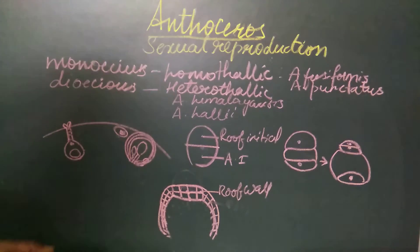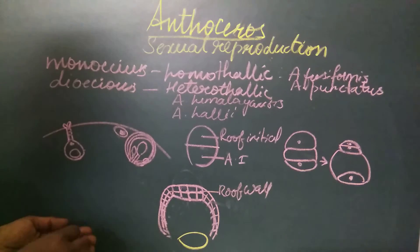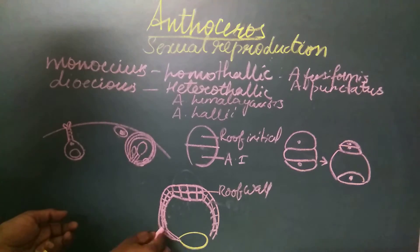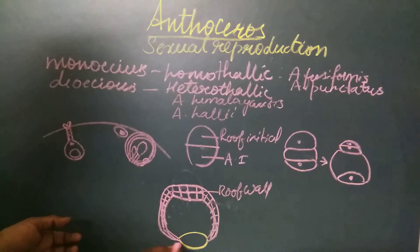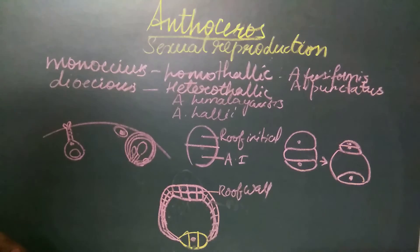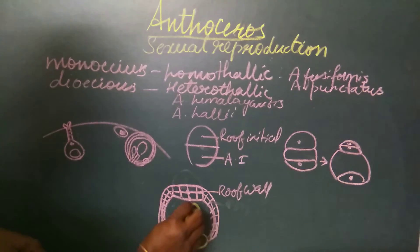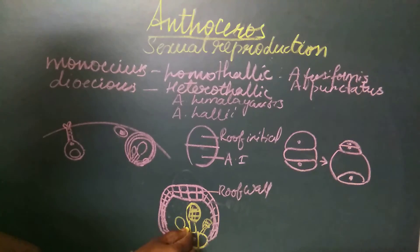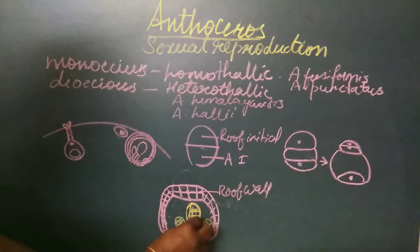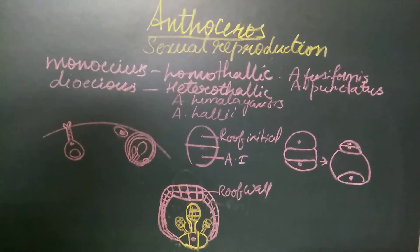The anthridial cell at the bottom of the chamber divides to form a single antheridium, or in certain species it divides vertically two or three times forming two to three cells, each of which develops into an antheridium. That is how we find either a single antheridium or a group of antheridia inside the chamber. When antheridia occur in clusters, they are at different stages of development — some fully grown, some mature, and some still developing.